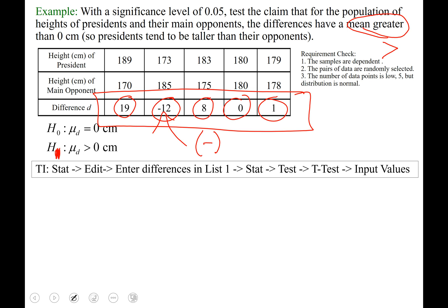Now we're going to hit stat again. This time we arrow over to tests and scroll down to t-test. Mine's the second option. And it is asking us if we want to run this program based off the data or off of the stats.